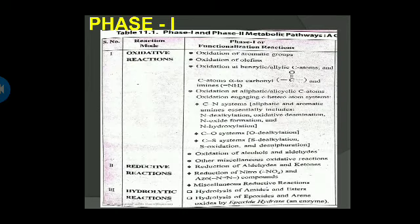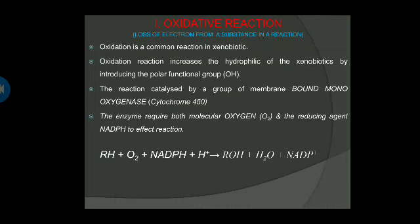Here is a summary of phase 1 reactions. Phase 1 reaction contains three types of reactions: one is the oxidative reaction, the second is the reductive reaction, and the third is the hydrolytic reaction. We will see them one by one.